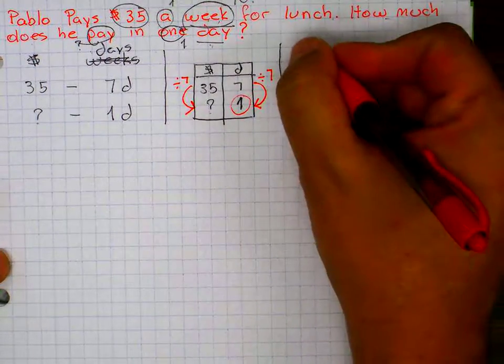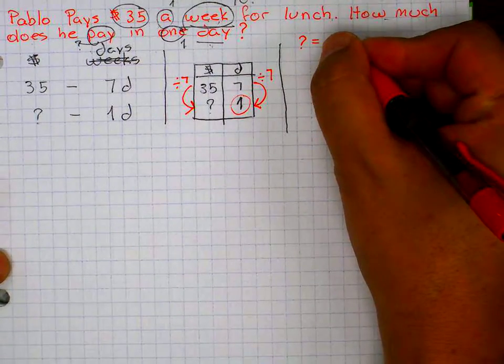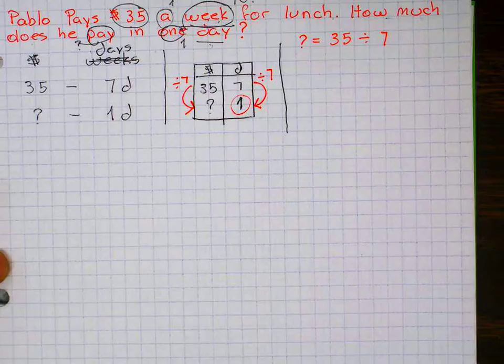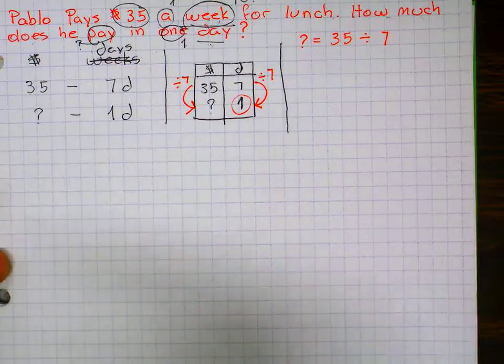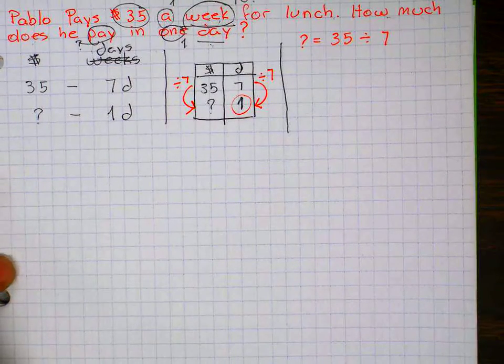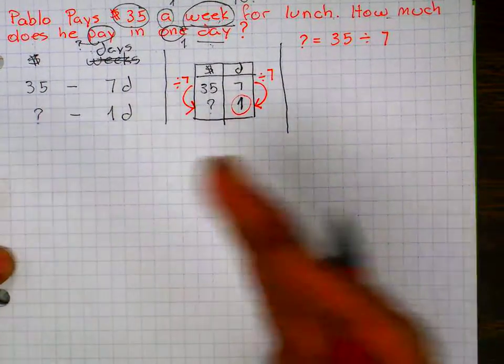So to figure out the number, how much he pays in one day, I need to divide. Like a week or seven days. My question is, do I know my groups? Do I know how much is in one group? What is it that I know?